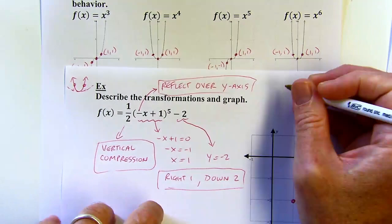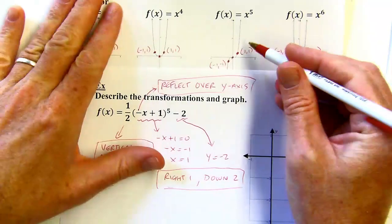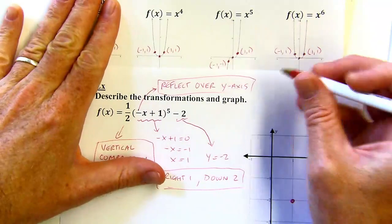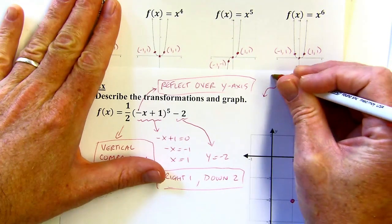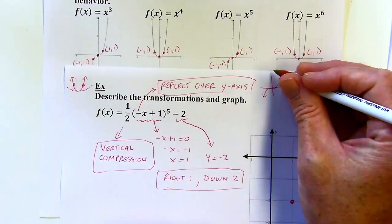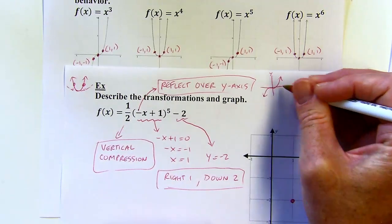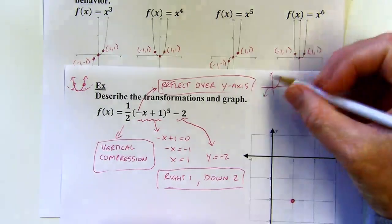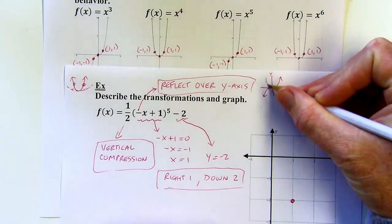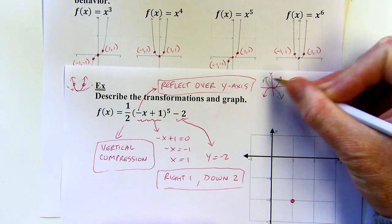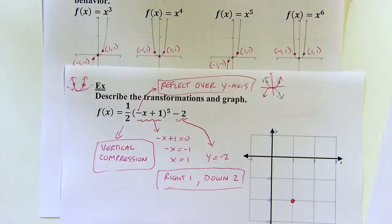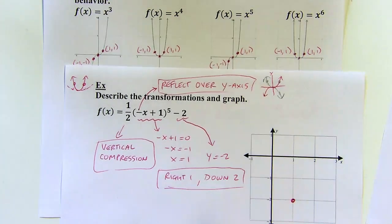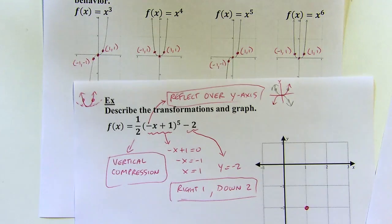So let's think for a second about reflecting over the y-axis. If here's my basic shape, if I'm reflecting over the y-axis, it's still going to make this happen — something like that. Because this point would be over there now, over the y-axis. So it's still going to be kind of a downhill curve going from left to right.